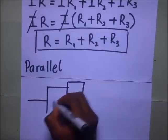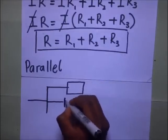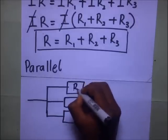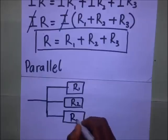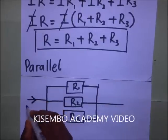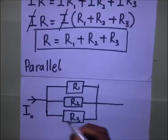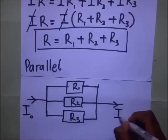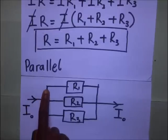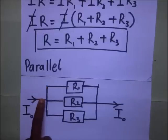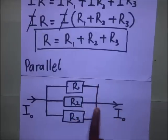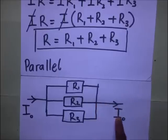Now let's look at resistors in parallel. We have resistor one, resistor two, and resistor three arranged in parallel. Current comes in — let's call it I-naught — and the same current I-naught goes out. When the current comes in, it gets divided: some goes through R1, some through R2, and some through R3. It passes through these resistors and recombines at the junction on the other side, coming back out as I-naught.